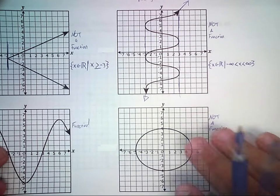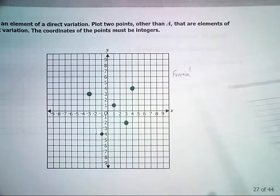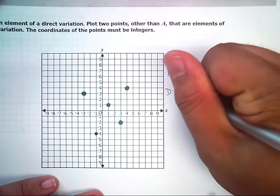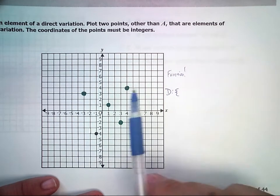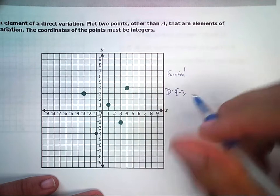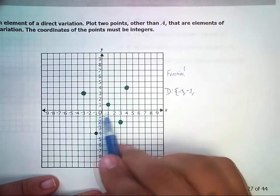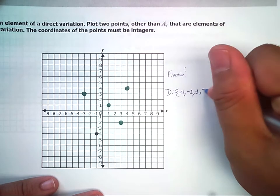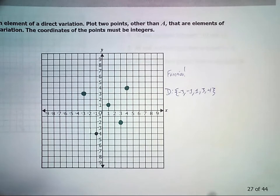Domain of the ordered pairs is actually a lot easier. So all you've got to do for this, to find the domain, is you just list all the x values. So let's see, negative three, negative one, one, three, and four. So domain for ordered pairs is actually kind of nice. You don't actually have to do too much work.